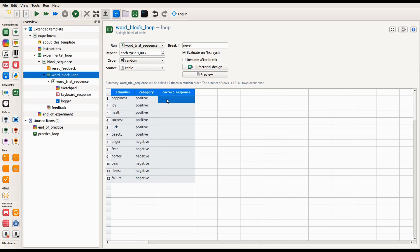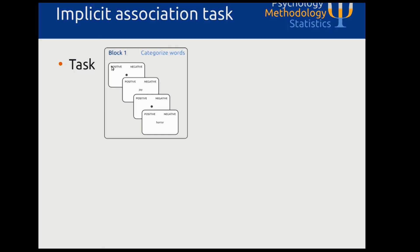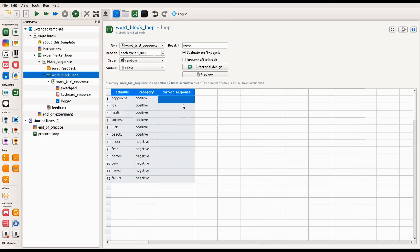In the last column I indicate what the correct response should be for each category. I call this column correct_response — a built-in variable that OpenSesame uses to calculate accuracy, so it must be spelled exactly with an underscore and no capitals. The category positive will appear on the left, so positive words are associated with the letter E. Negative words appear on the right, associated with the letter I. For each positive word the correct response is E, and for each negative word it is I.